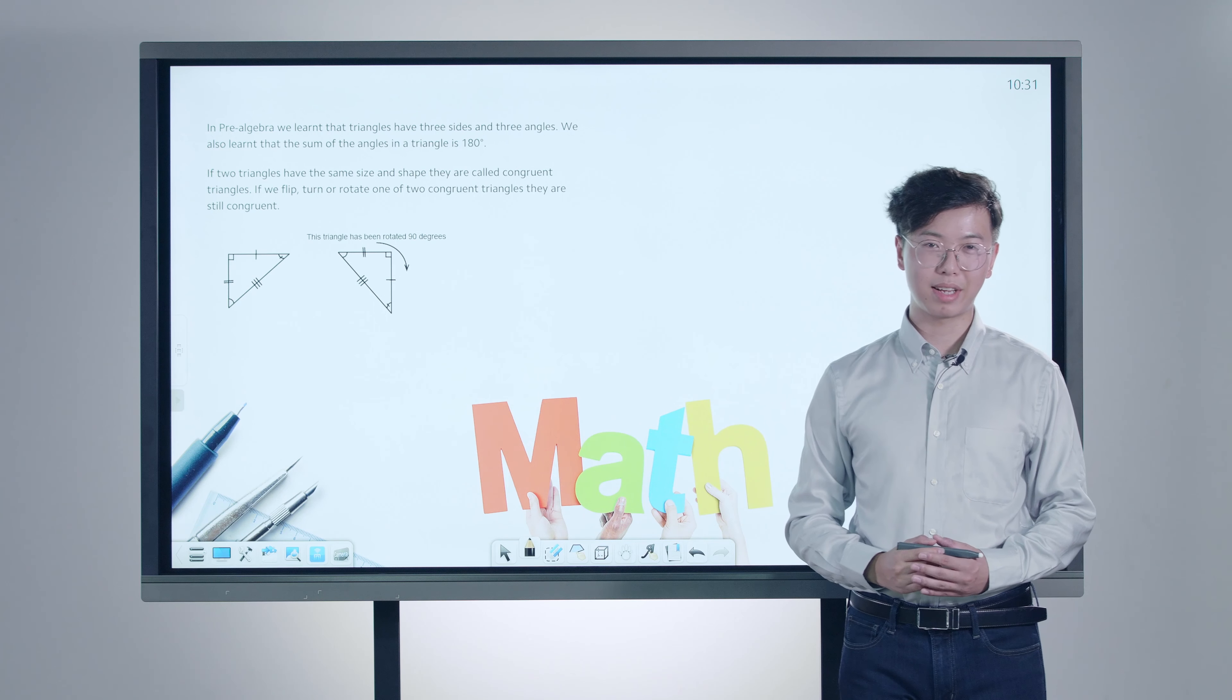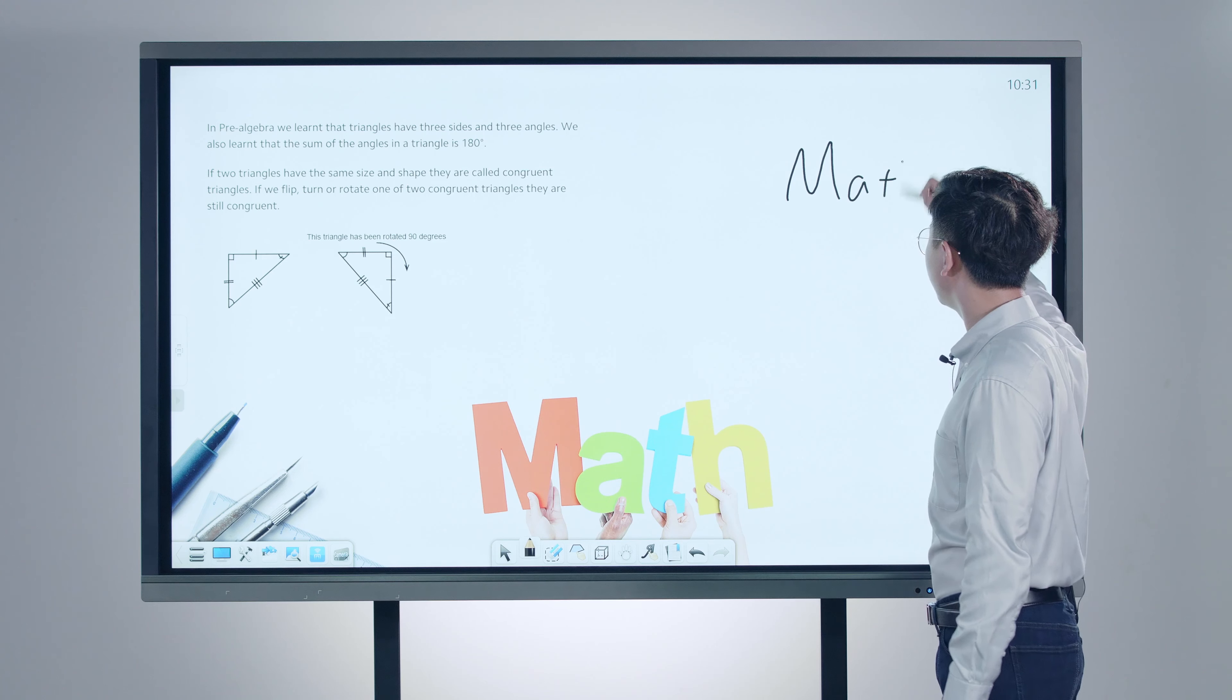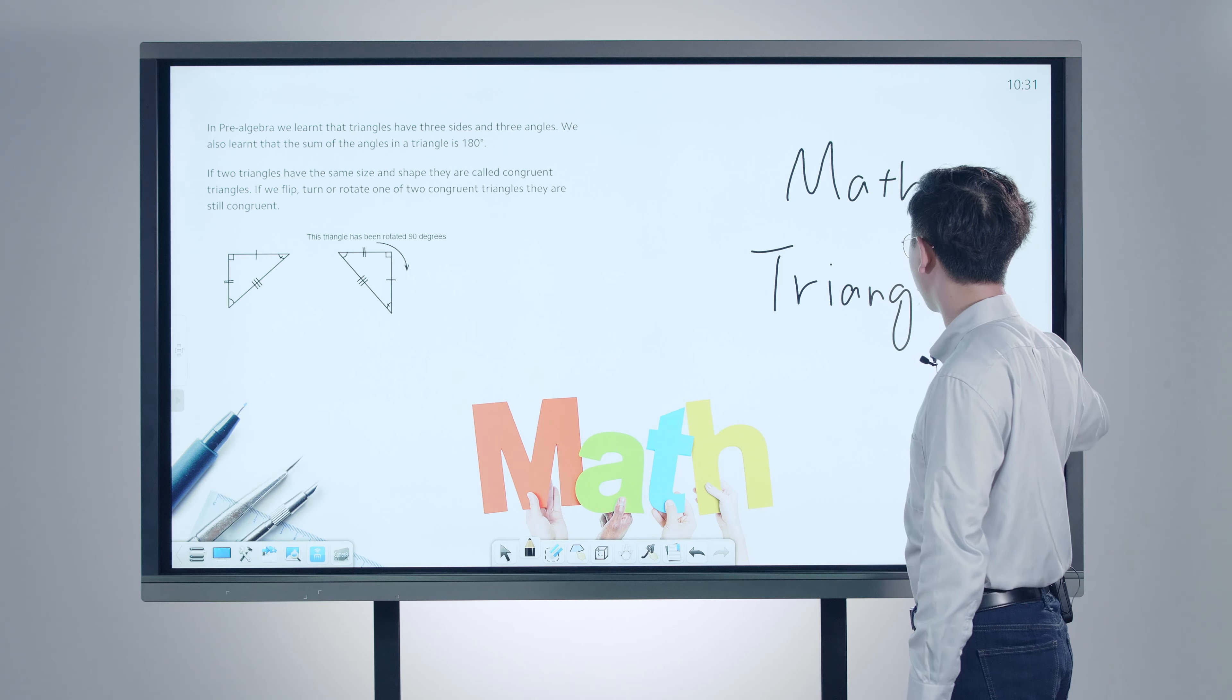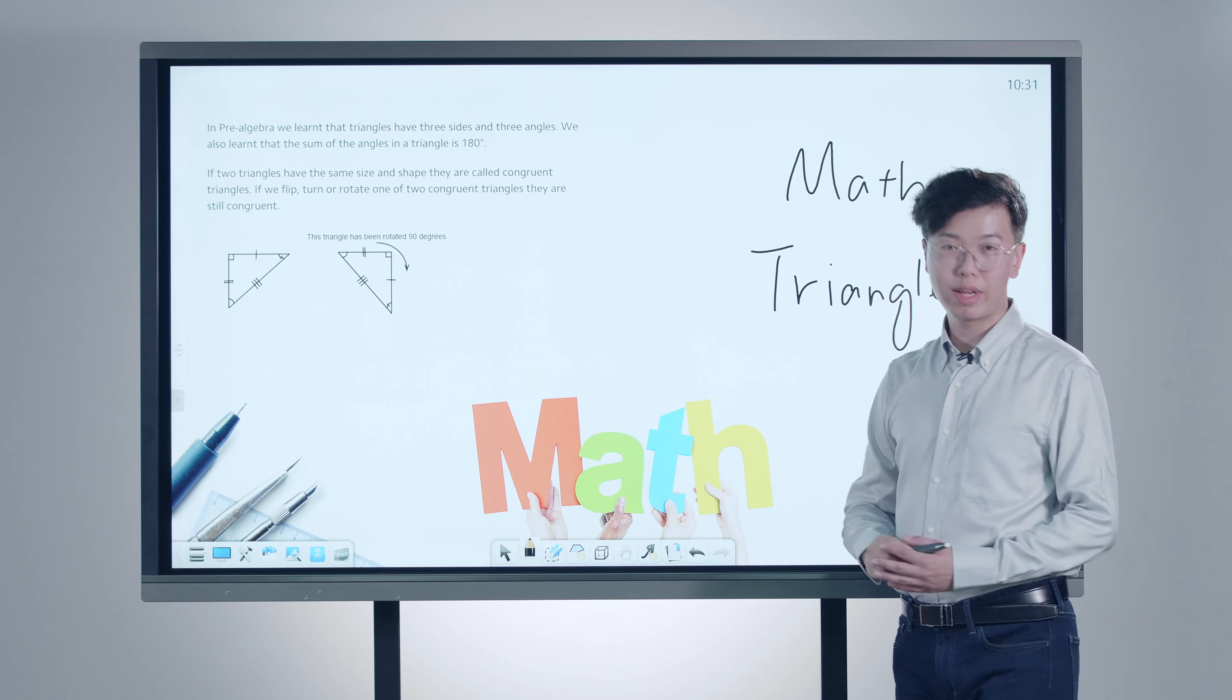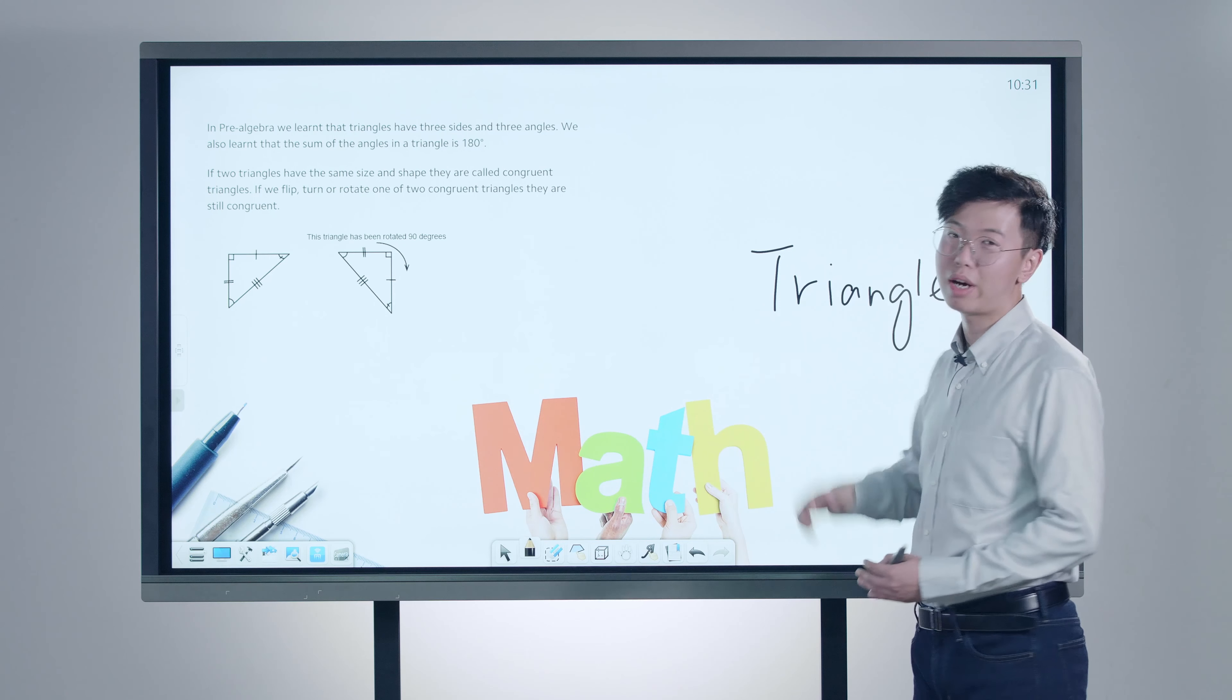Like in the Mathematics class, you can easily write the topic of the class just as fluently and accurately as on your traditional whiteboard. If you are about to erase it, just use the back of your hand to erase, without switching to other tools.